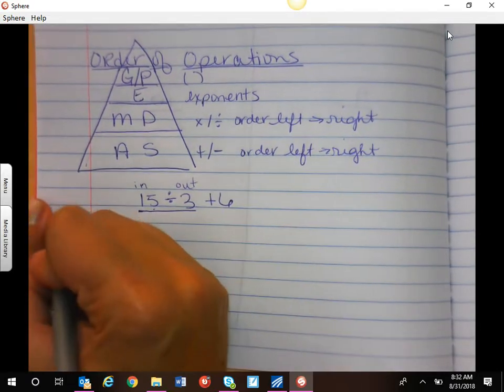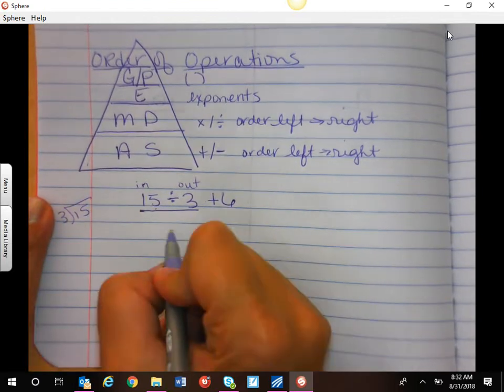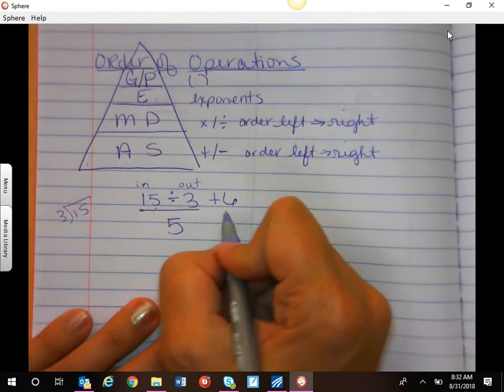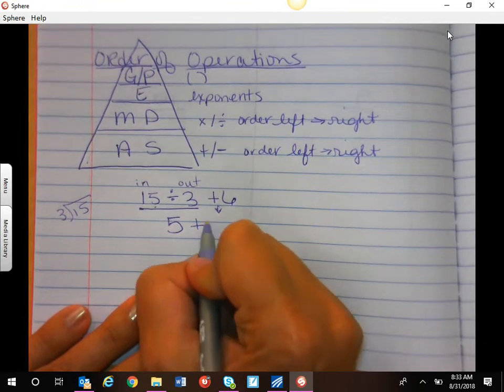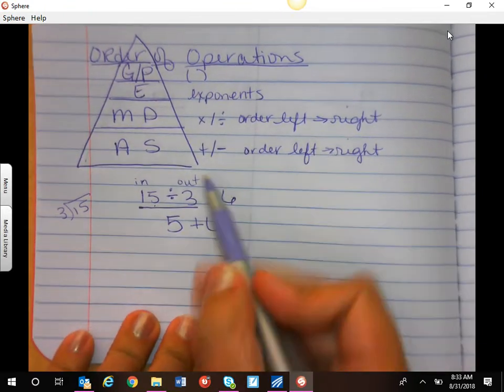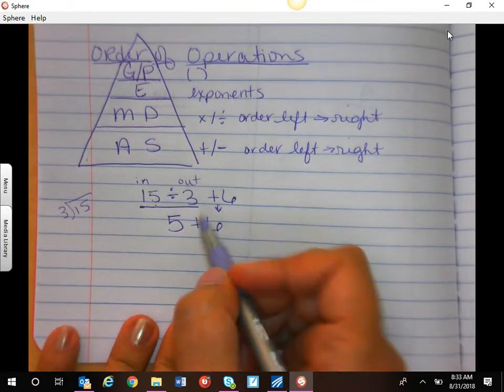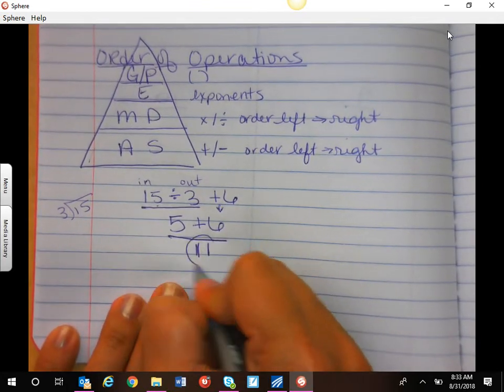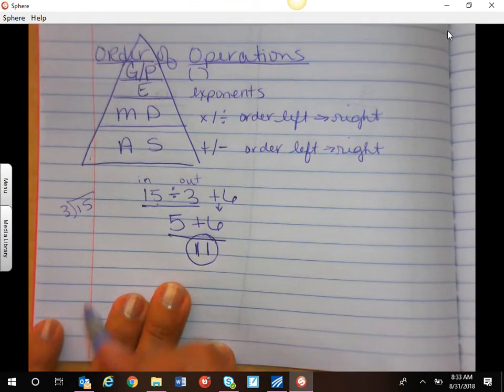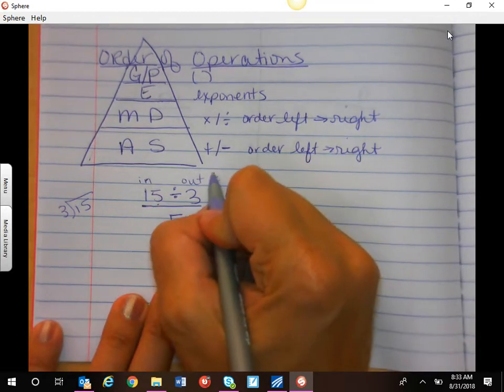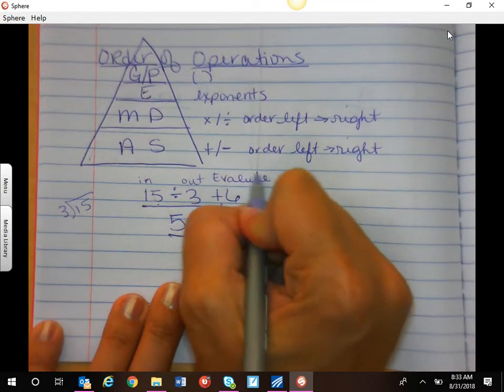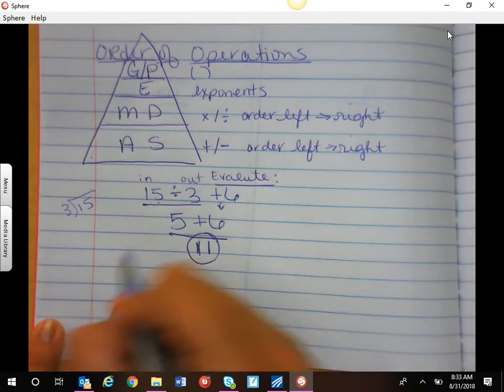So if you wanted to, you could write it like this. And we should get 5. And then we're going to bring down what's left. That's at the bottom of our pyramid. Add subtract, 5 plus 6 equals 11. So if we were to evaluate using order of operations, this example, we would get 11.